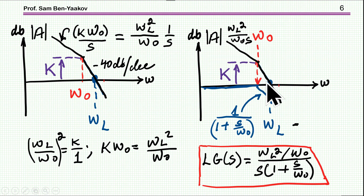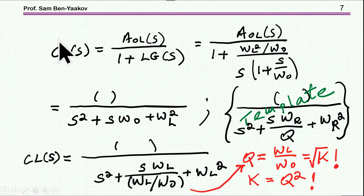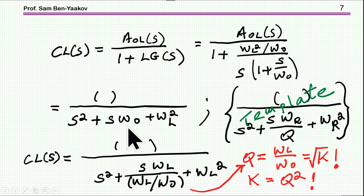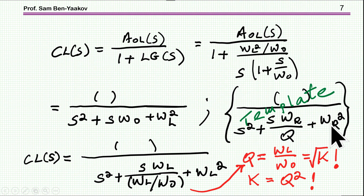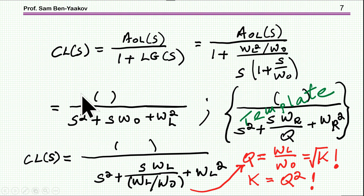We know that the closed-loop response equals the open-loop response over 1 plus the loop gain. Looking at the denominator — the characteristic equation — this is a second-order equation. I have a template of a second-order equation: S² term, a resonant frequency, and the parameter Q. By matching this to the template — noting that ωL is related to ωR² and dividing out terms — I get the closed-loop denominator in standard second-order form.